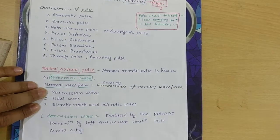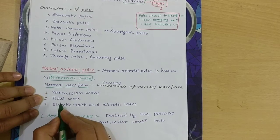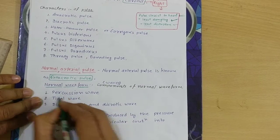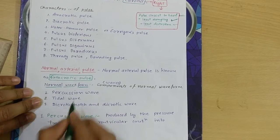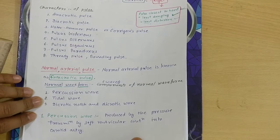If we discuss the waveform of a normal pulse, the normal waveform has three components: percussion wave, tidal wave, and dicrotic notch and dicrotic wave.